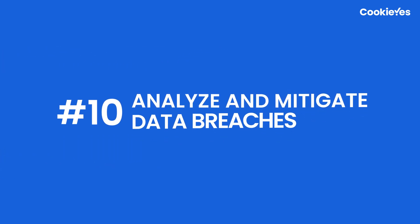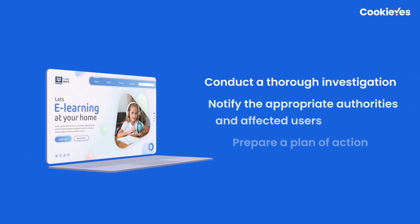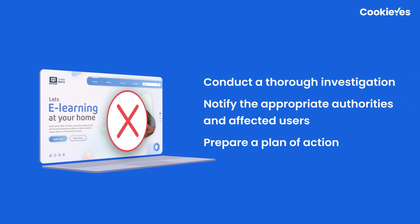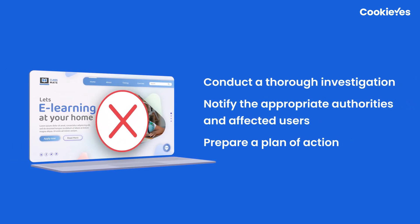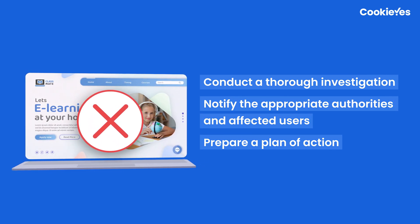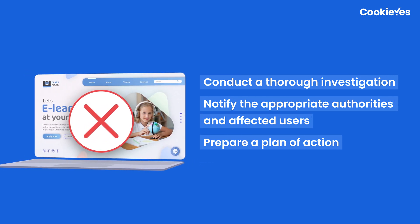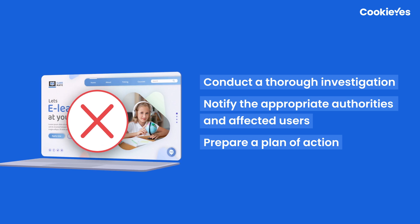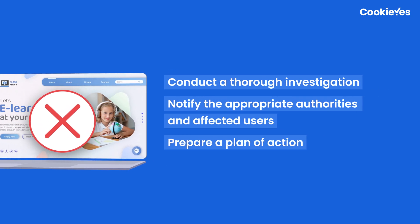And lastly, analyze and mitigate data breaches. In the event of a data breach, you should block access to your website, conduct a thorough investigation, notify the appropriate authorities and affected users, update your policies and procedures, and prepare a plan of action for future breaches. That brings us to the end of this checklist.